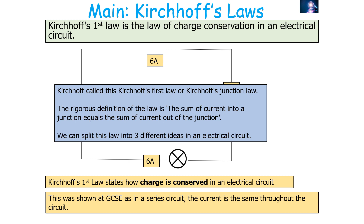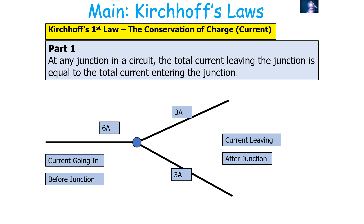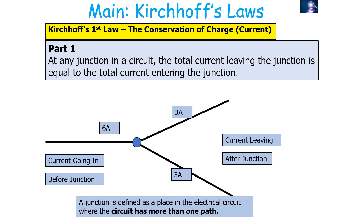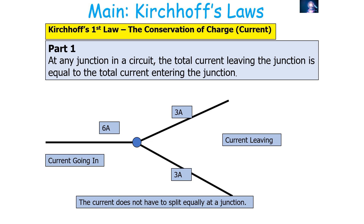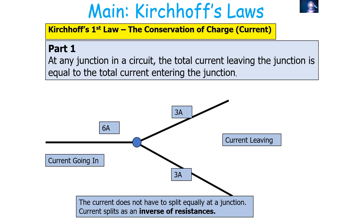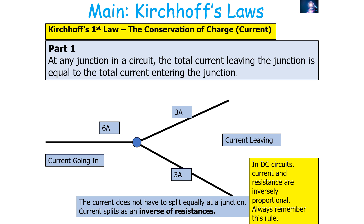We can split this law into three ideas. First, at any junction in a circuit, the total current leaving the junction is equal to the total current entering the junction. A junction is defined as a place in an electrical circuit where the circuit has more than one path. The current does not have to split equally at the junction; in DC circuits, current and resistance are inversely proportional. The greater the resistance, the more impedance there is to charge flow, so the lower the current.